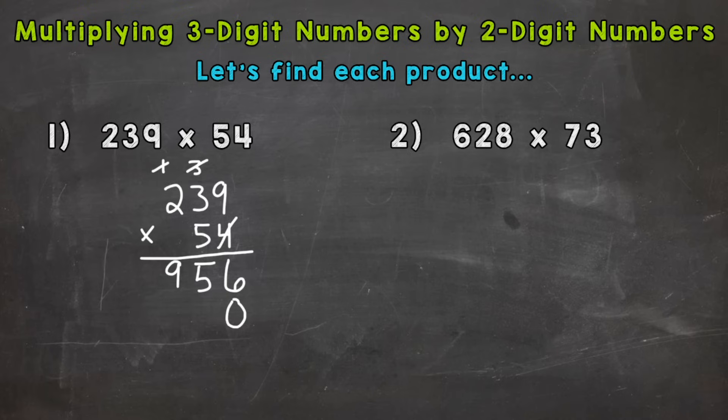Now we need to do five times nine, three and two, just like we did with the four in our first step. So five times nine is 45. So we put our five here, carry the four. Now we do five times three plus that four, which is 19, carry the one. And then five times two is 10 plus that one is 11.